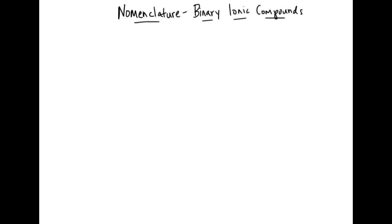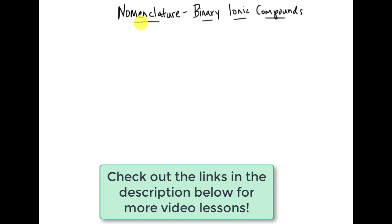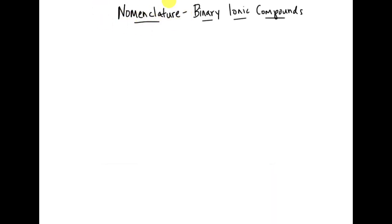Hello, today's lesson is on naming compounds and formula writing. In this lesson we're going to talk about nomenclature — the word we use for naming compounds. It's a systematic way of naming things; you might have heard this in biology, but we also use it in chemistry to systematically name compounds.